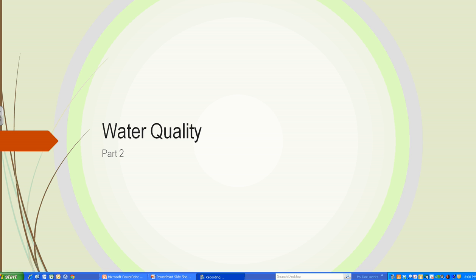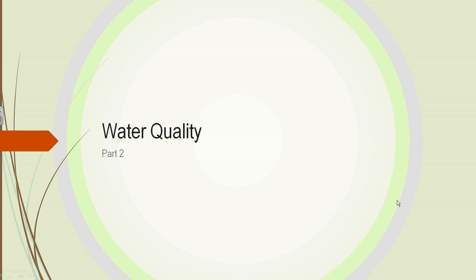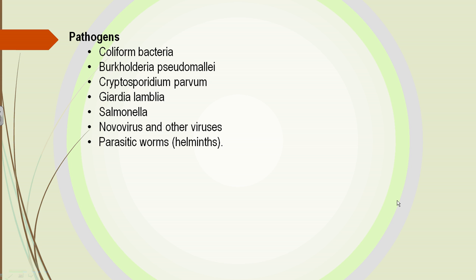This is SAT-105, Unit 4, Water Quality, Part 2. In that water, not only chemicals will be present — we can have other types of organisms. We can have coliform bacteria all the way up to salmonella, and even worms and viruses. All these need to be tested for and removed before the water is fit for human consumption.